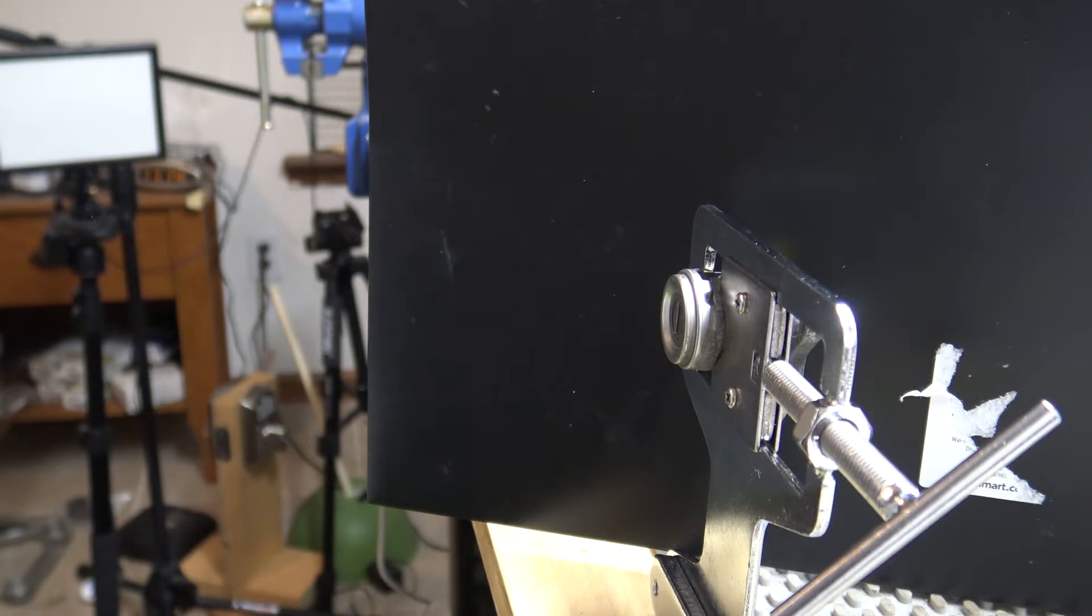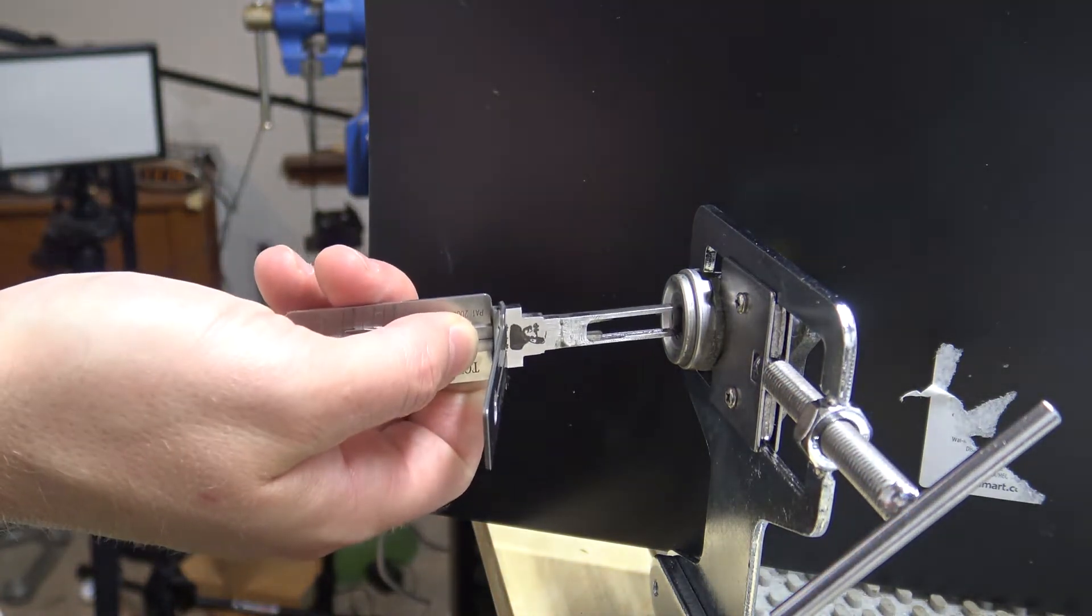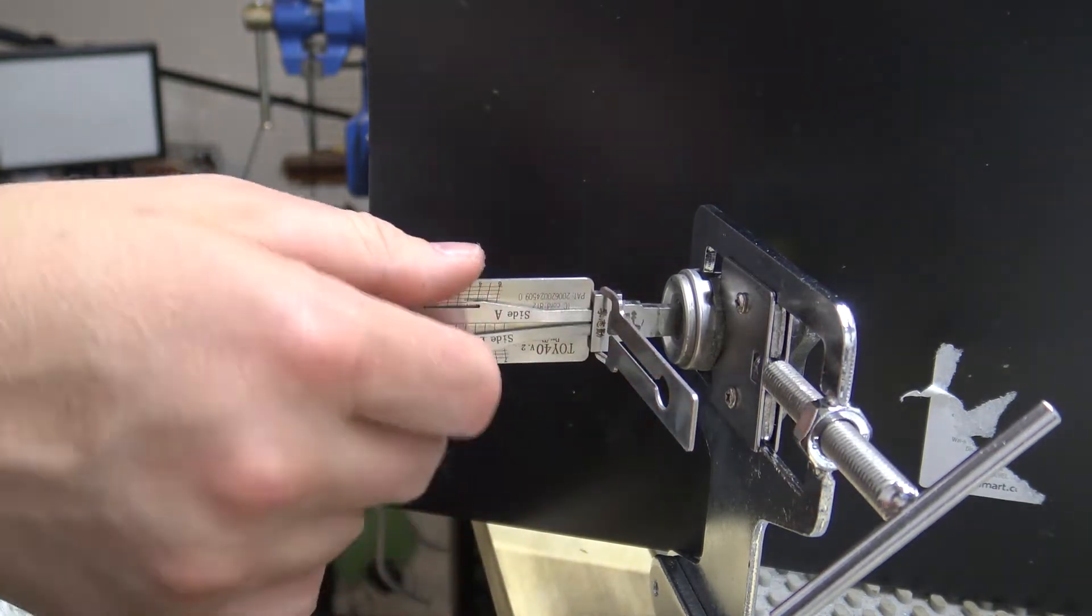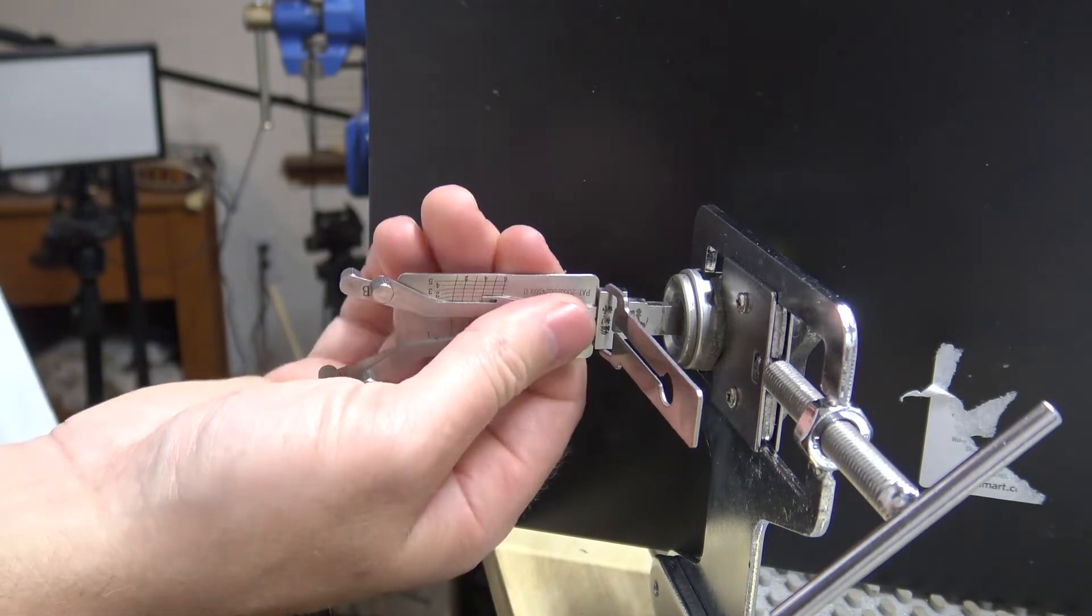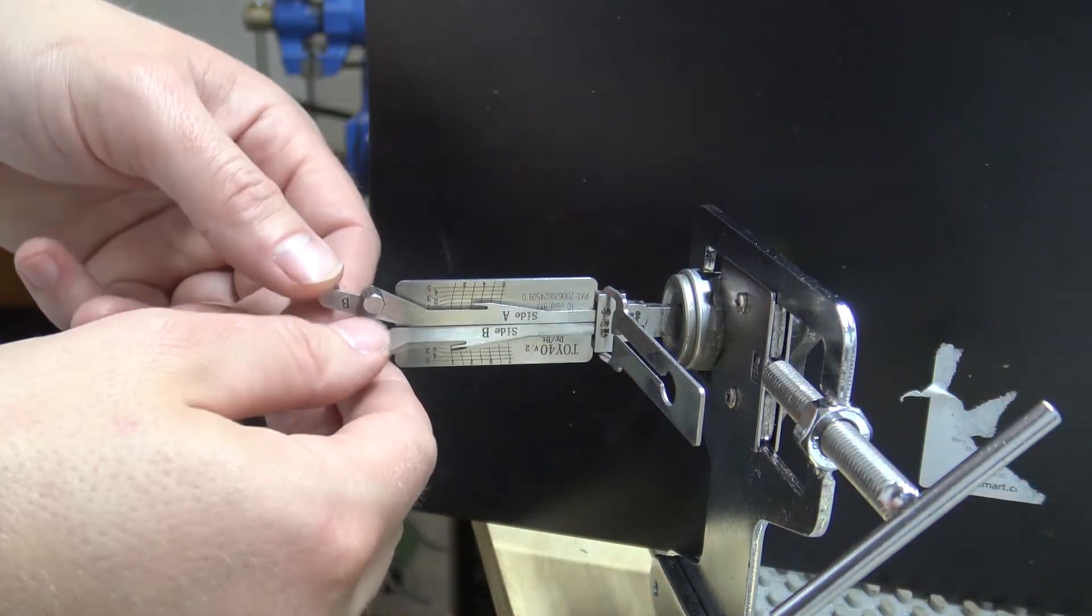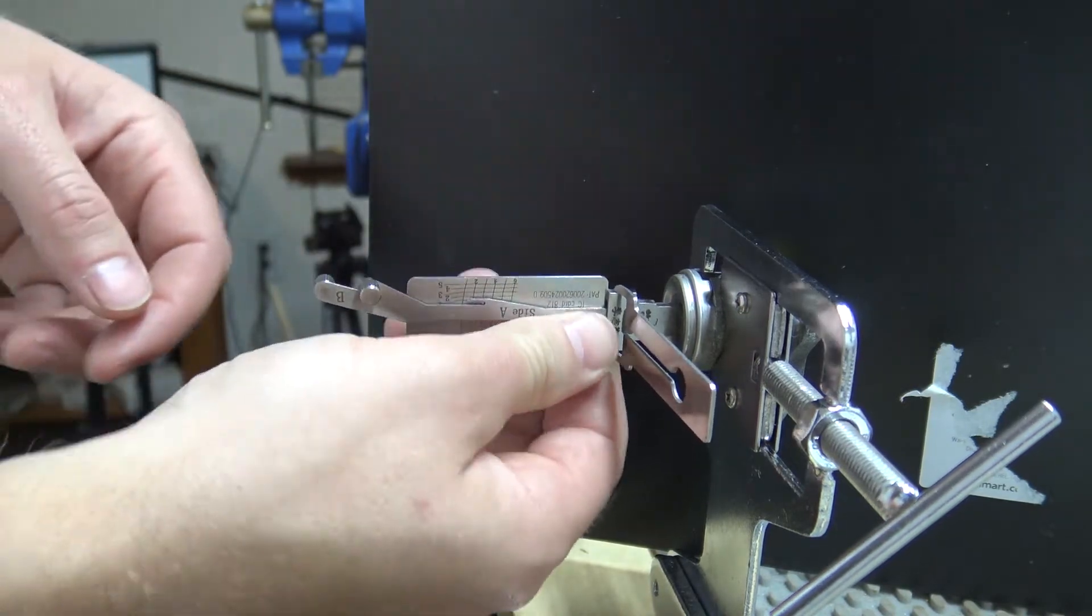You normally have to pick these twice and then have to pick it back to home position. This particular lock has some deep cuts in it, and I think because of that I don't actually have to pick it twice. It'll kind of hang up and then it'll roll all the way over without having to pick it a second time, and then also it'll go back to the home position too. So I guess that's kind of just luck of the draw on this particular lock.